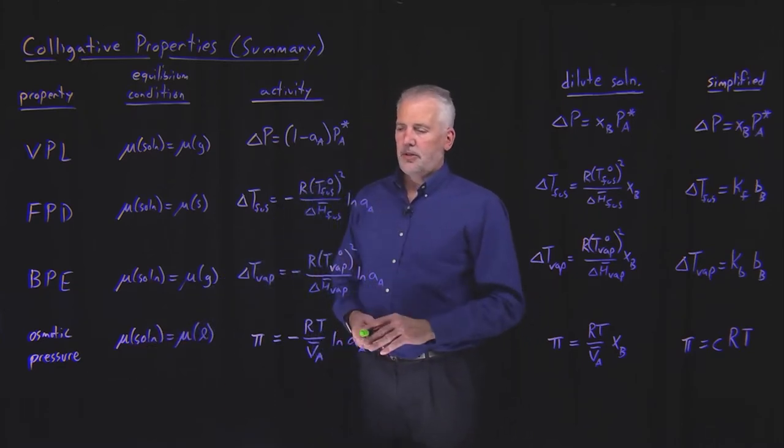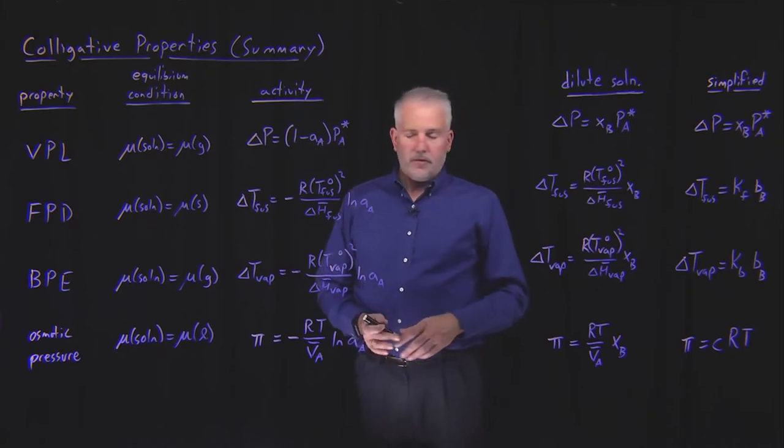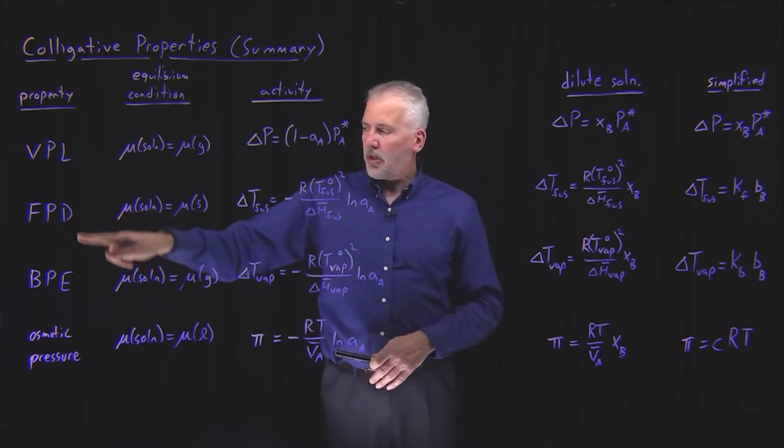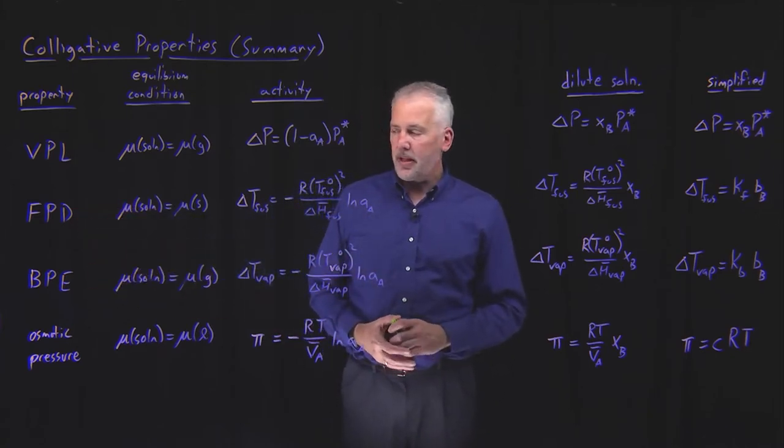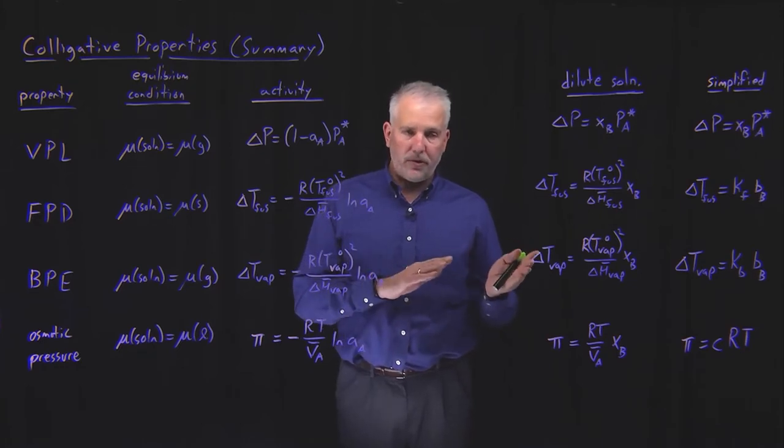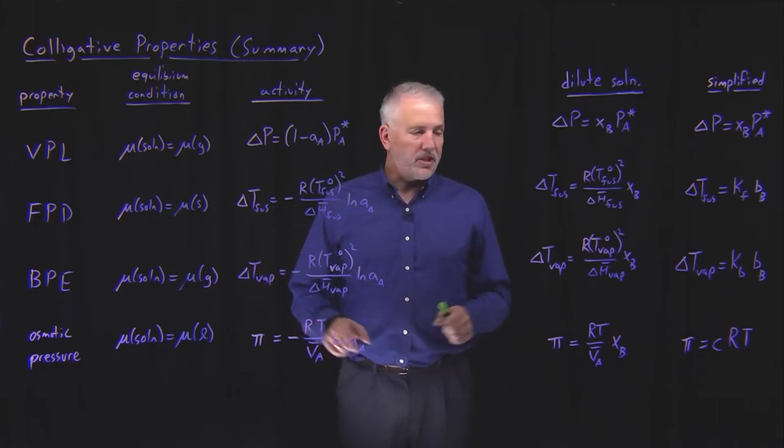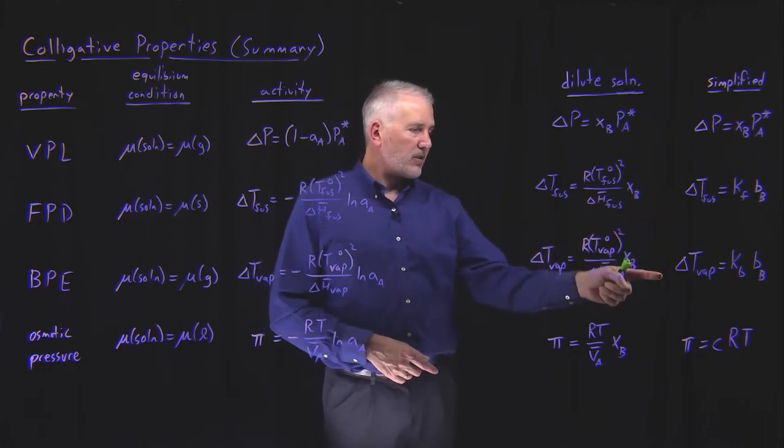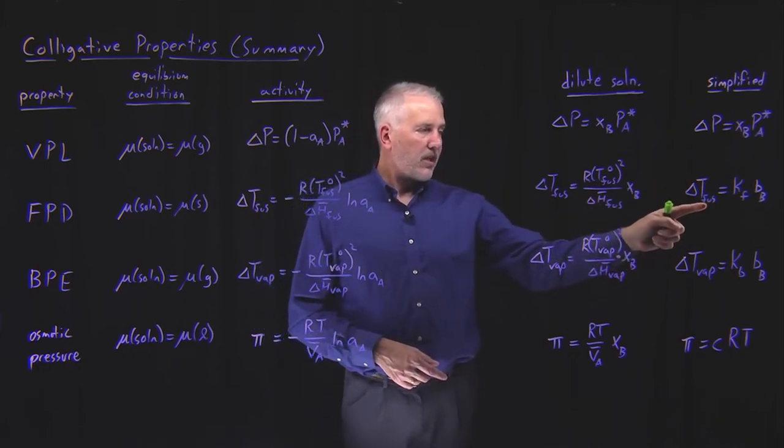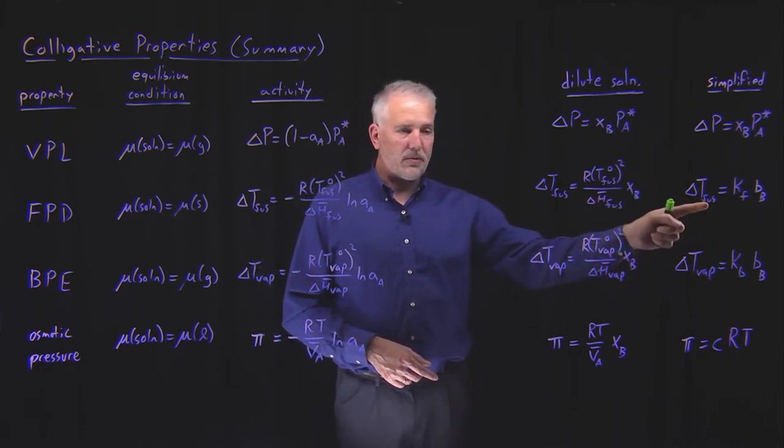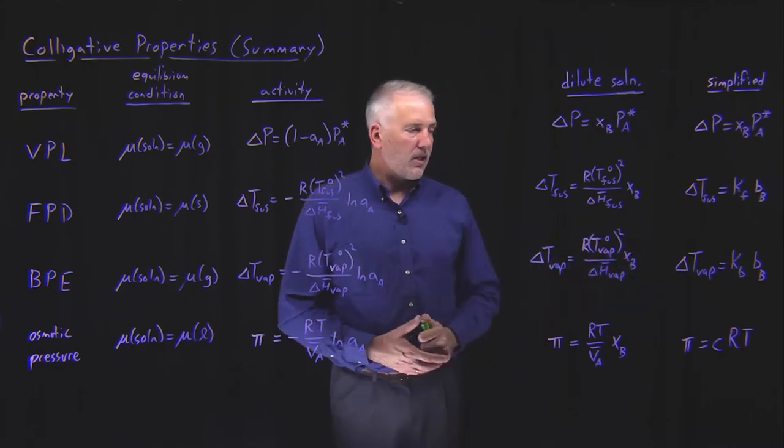So there's a few things to point out here. Number one, first of all, freezing point depression and boiling point elevation are almost the same thing, just one mirrored for freezing point versus boiling point. Each one of these expressions in these second and third rows is exactly the same. I've just replaced fusion with vaporization for freezing point and boiling point.